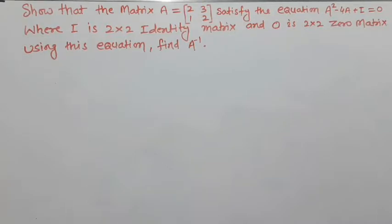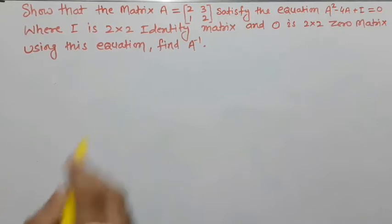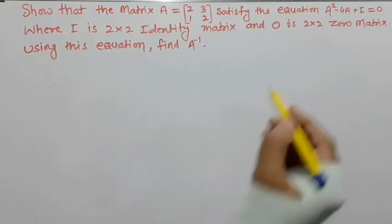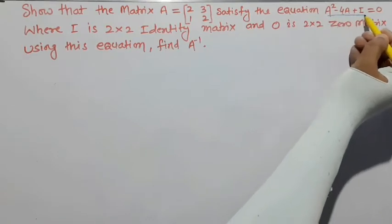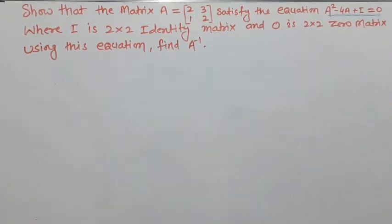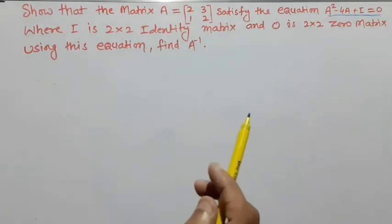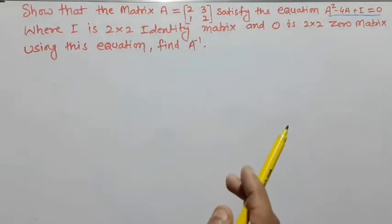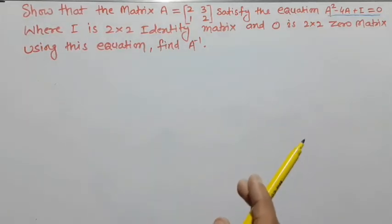Hello everyone and welcome to my channel. The matrix A is equal to [[2,3],[1,2]]. We have to prove the equation A² - 4A + I = 0, where I is the 2×2 identity matrix and 0 is the 2×2 zero matrix.